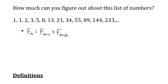Another pattern you might have noticed is that every third number in this sequence is an even number — the third number, sixth, ninth, twelfth — and the pattern would continue. They're all divisible by two, they're all even numbers.